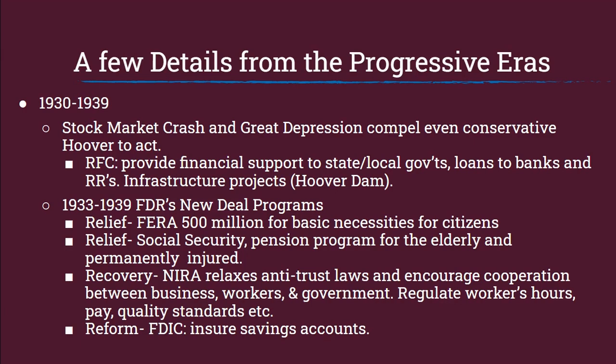Hoover lost the 1932 election to Franklin Roosevelt, who promised Americans a New Deal — government intervention the likes that had never before been seen. There are many New Deal programs; here are a few highlighted ones, divided into direct relief, economic recovery, and permanent reform. FERA helped provide basic necessities for citizens. Social Security, which we still have, is a pension program for the elderly and permanently injured. The NIRA relaxed antitrust laws while encouraging — and some historians say compelling — cooperation between business, workers, and government, with guidelines for workers' hours, pay, and quality standards. Finally, a permanent reform example is the FDIC, which was meant to return confidence in the banking system, as the government would insure savings accounts so that if a bank failed, customers would not lose their money.